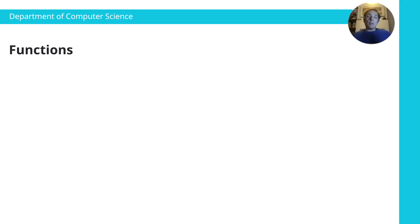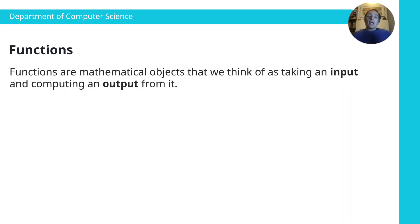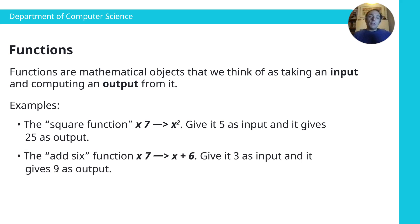Functional programming is about computing with functions. Functions are mathematical objects that you think of as performing some computation — they take an input and compute some output. Here are some example functions: the function that squares a number takes x and gives you back x squared, so if you give it five it gives you 25. Or the function that adds six to a number takes x and gives you back x plus six — if you give it three you get back nine, if you give it nine you get back 12.